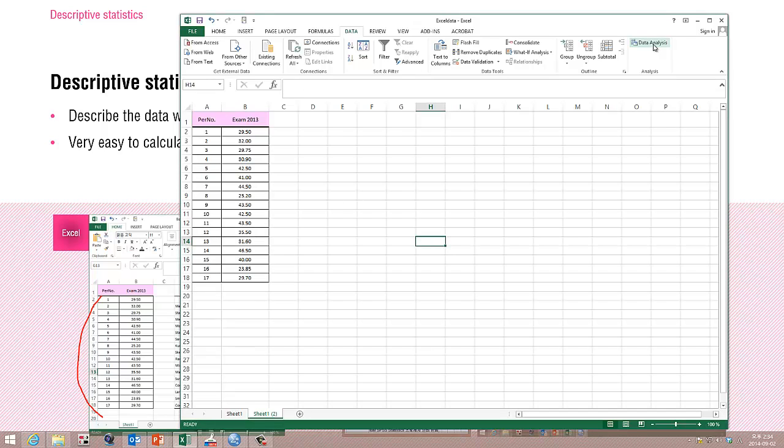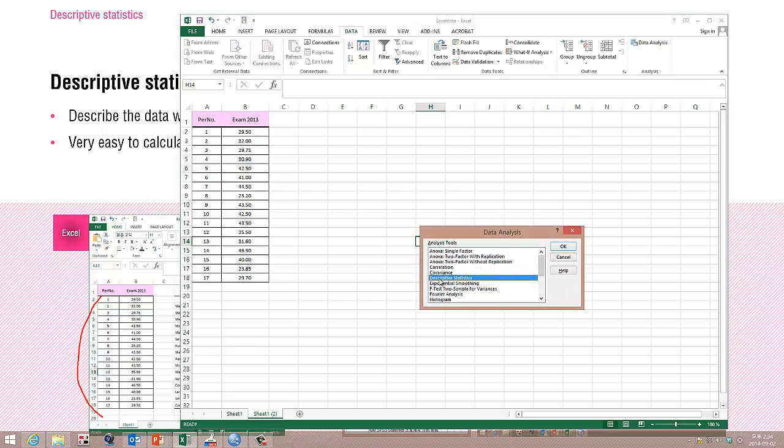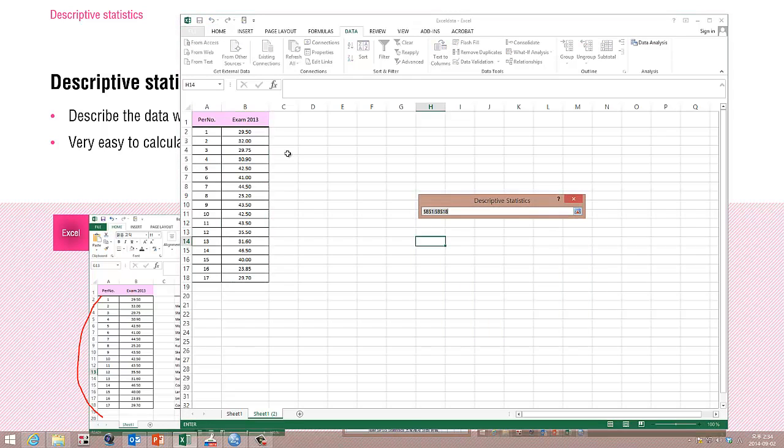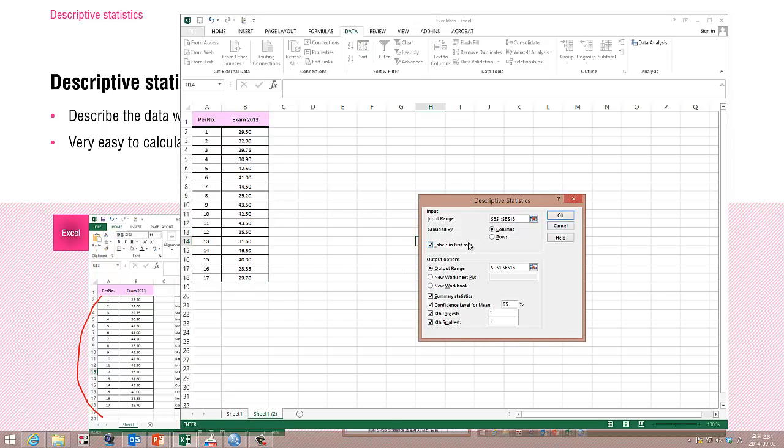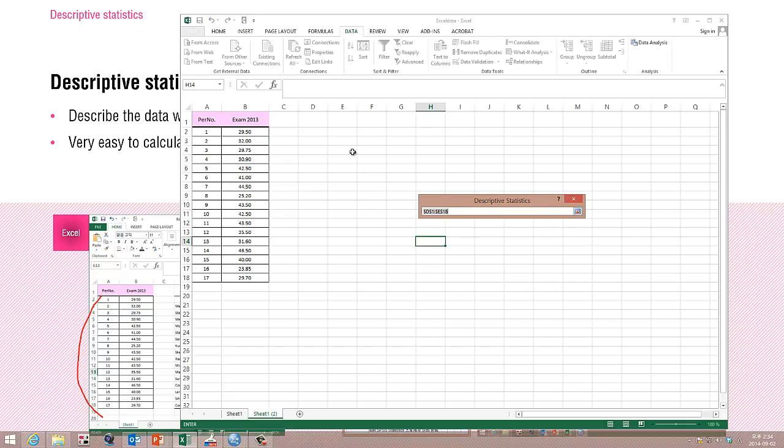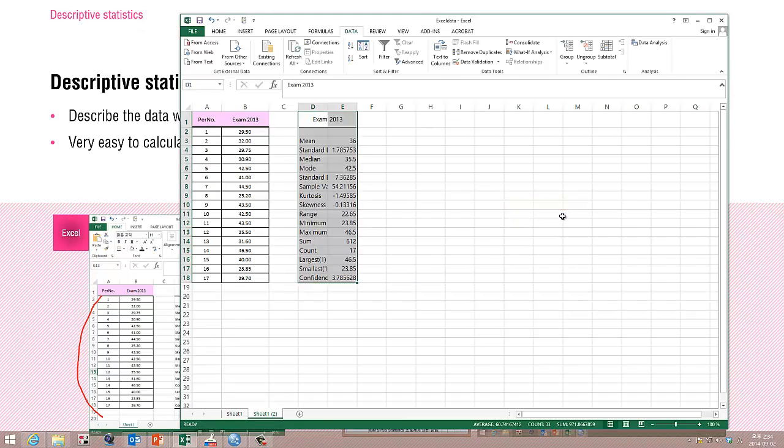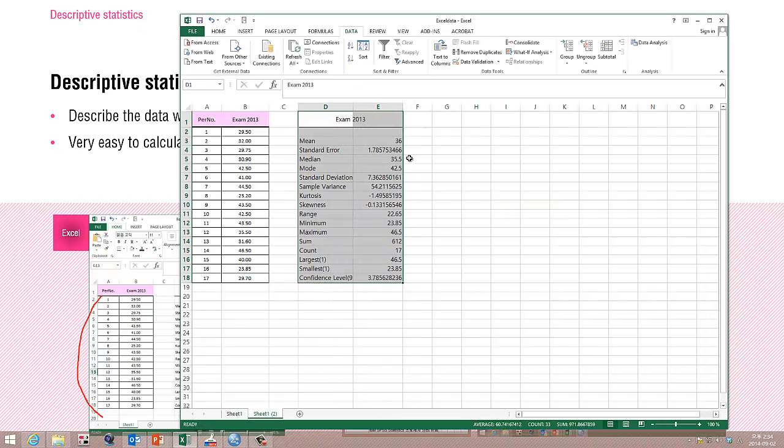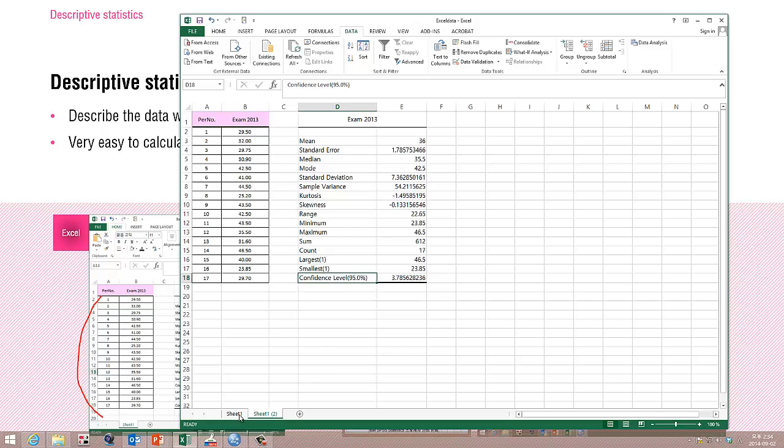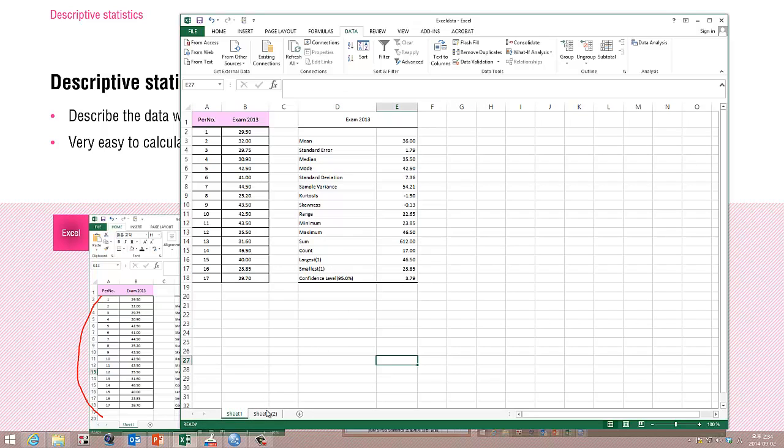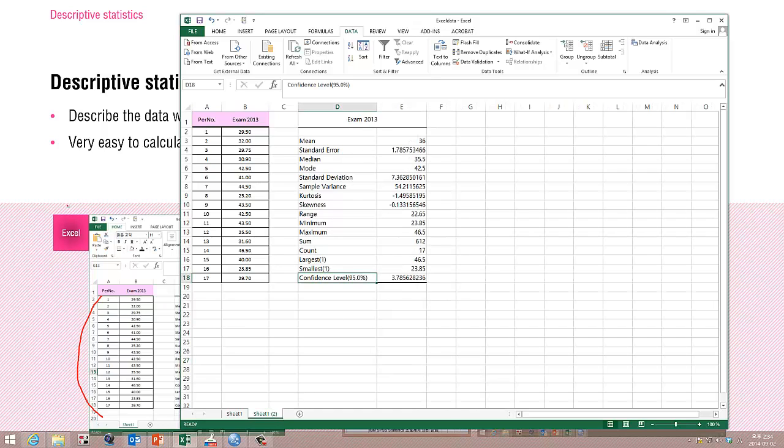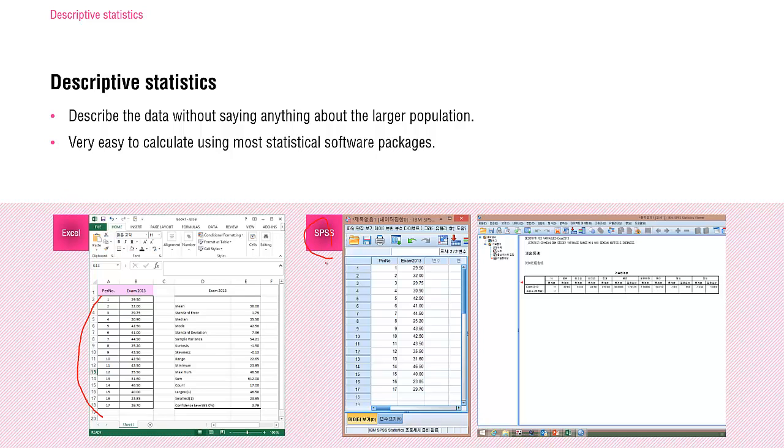Using Excel you can click data analysis and select descriptive statistics and the input range you are assigning. Here, very quickly, you get from mean value to confidence level with 95%, and in sheet 1 I made it more beautifully, but basically they are the same identical data. And using SPSS, you can calculate some different parameters, but basically both offer very nice functions to calculate the descriptive statistics very quickly and very easily.